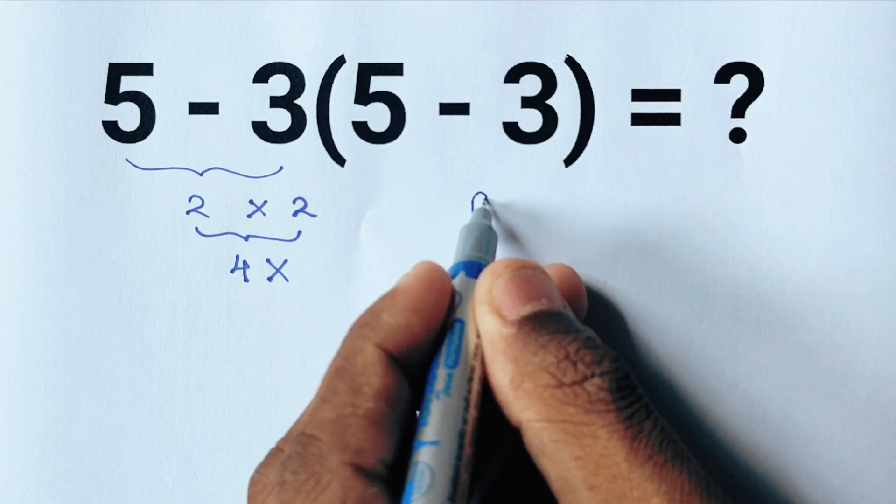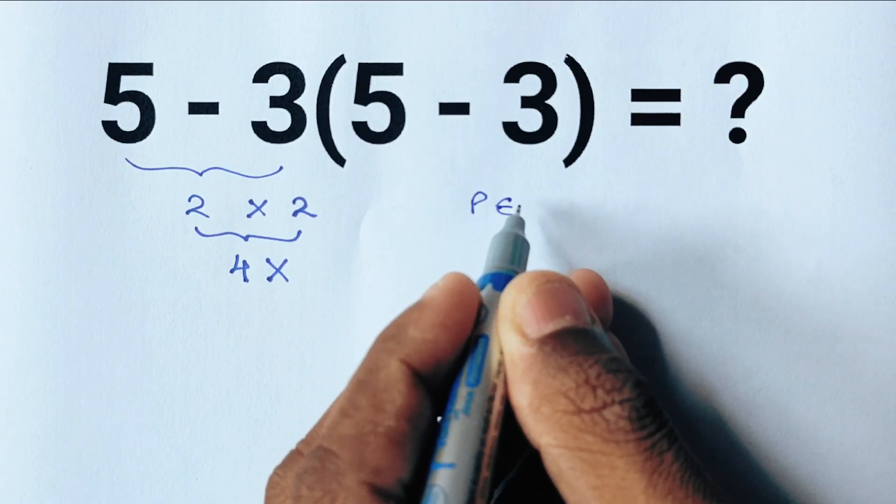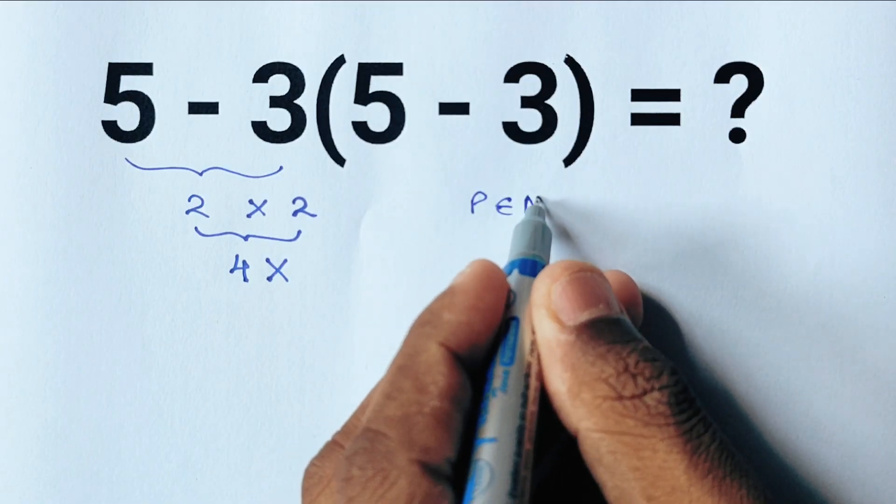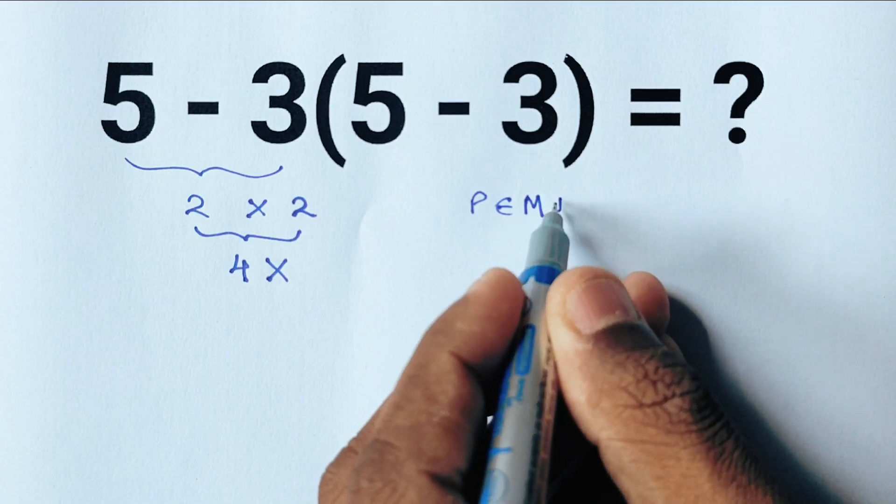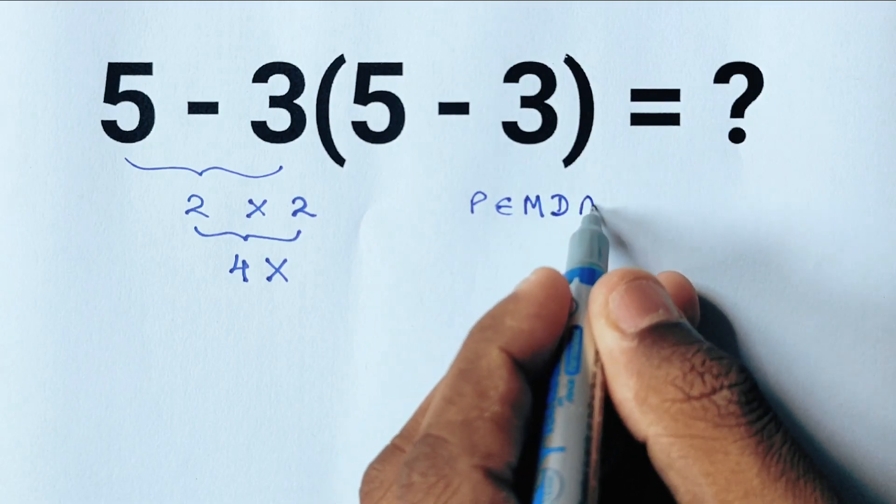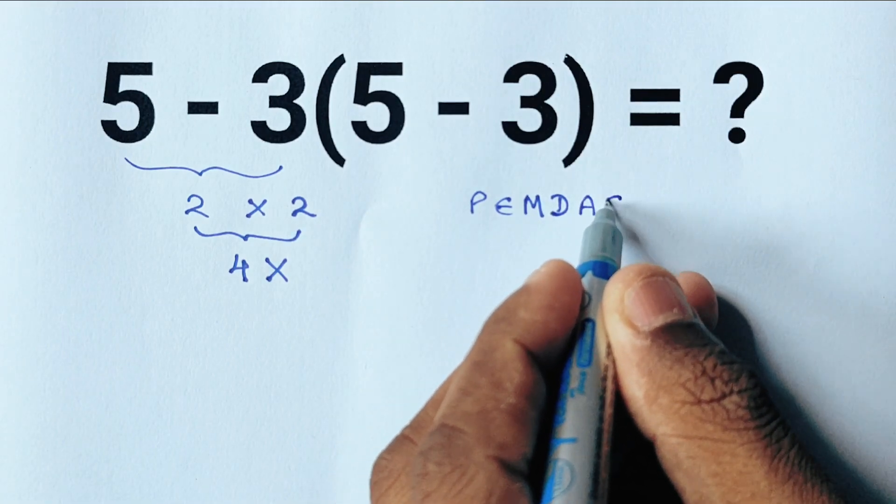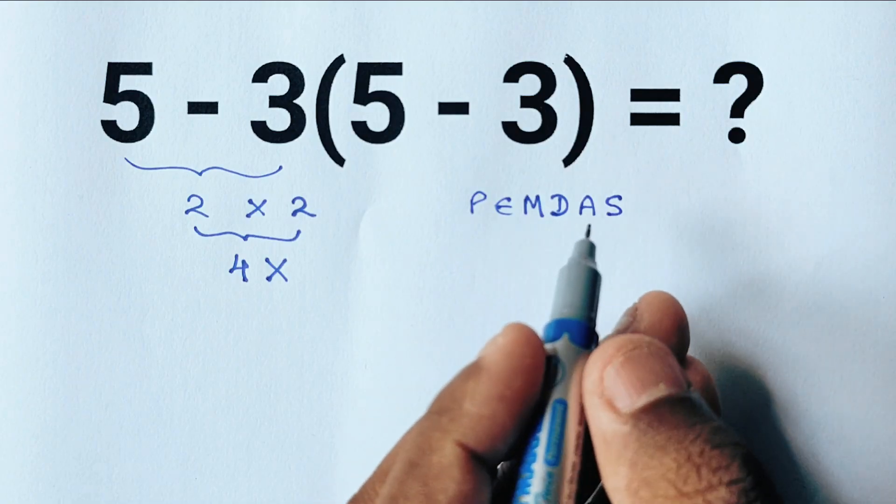In PEMDAS, P stands for parenthesis, E stands for exponents, M stands for multiplication, D stands for division, A stands for addition, and S stands for subtraction.